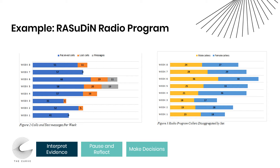For each one of the program sessions, they documented several different sources of information, including the number of callers for both calls and texts, the sex of each caller, as well as documenting the communication content. When people called into the radio station, they documented the content of that call so they could then analyze it for themes. Here on this slide, we see the counts of the radio call-ins and texts and how that is broken down by sex.